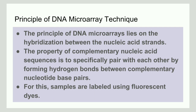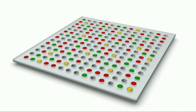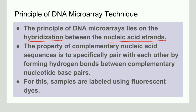The basic principle behind a microarray is hybridization — that is, hybridization between nucleic acid and nucleic acid. This diagram shows a microarray: a solid support to which DNA is loaded, with hundreds and thousands of spots, each less than 200 microns in diameter. We use the property of complementarity, where complementary strands pair with each other based on hydrogen bonds. The samples are labeled using a fluorescent dye.